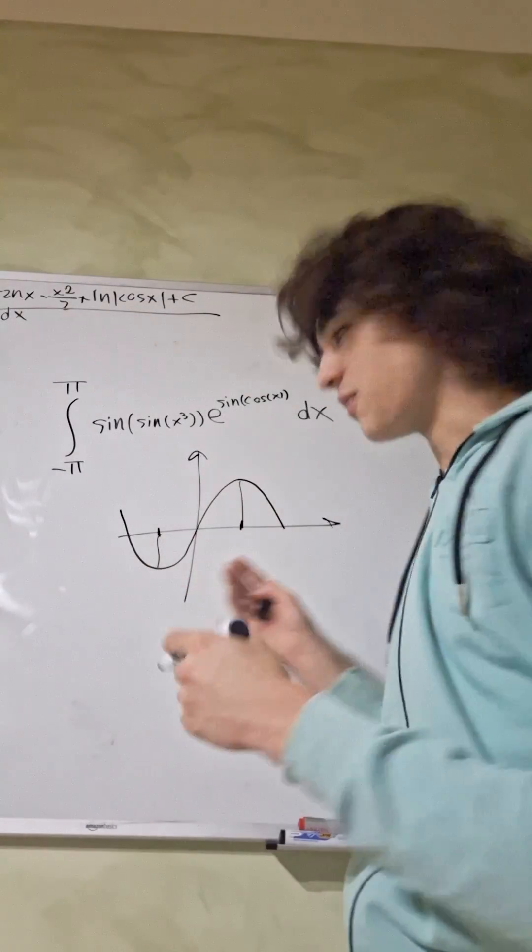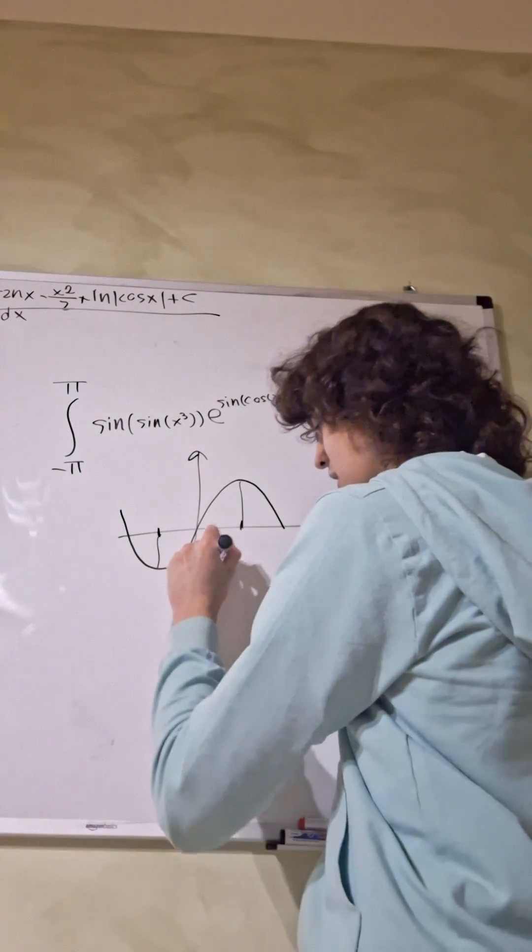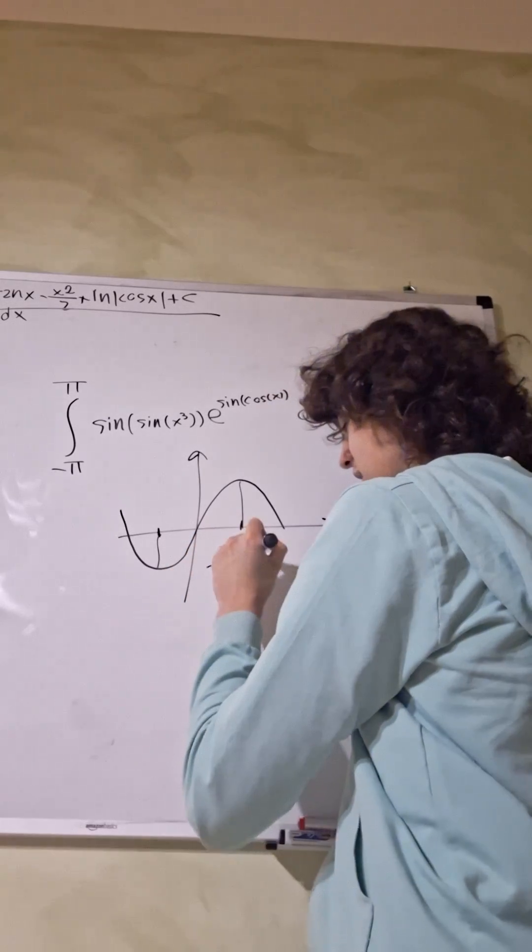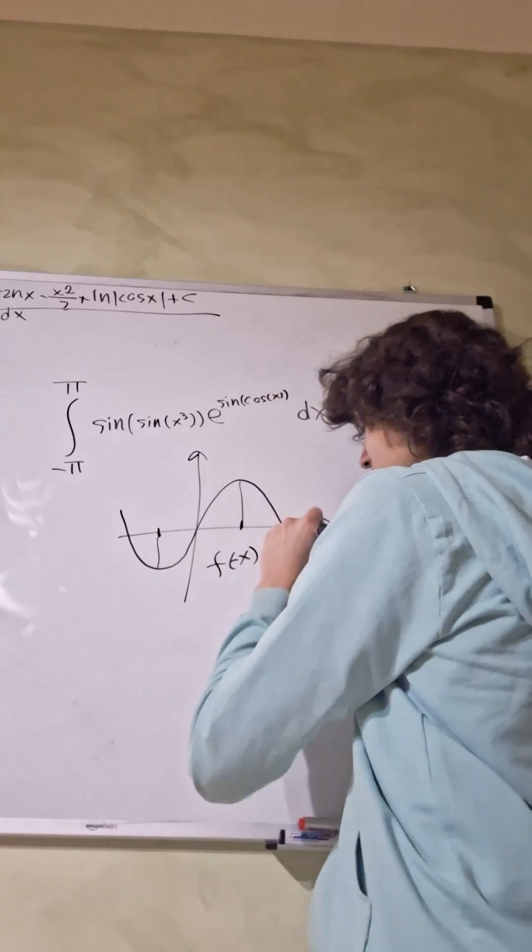So we need to check whether this function is odd. A function is odd if f of minus x equals minus f of x.